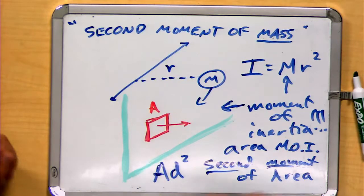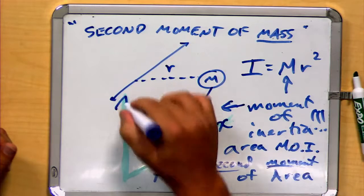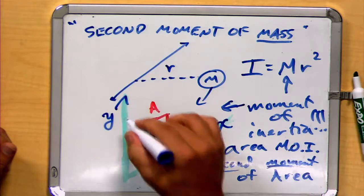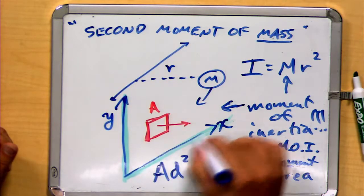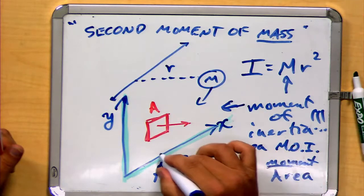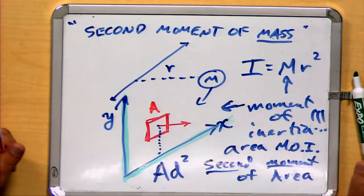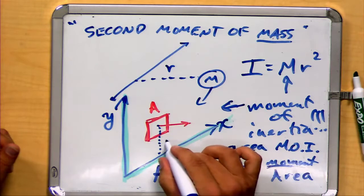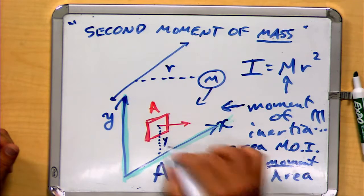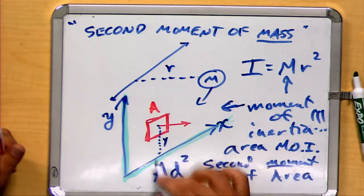If I decide to call this, for example, my x-axis, and call this vertical one my y-axis, I could choose to spin myself around either of those axes. Well, in the first case, if I want to rotate around the x-axis, the distance to this point A is actually a distance y measured along the y-axis. To spin around x, I have to measure along y.